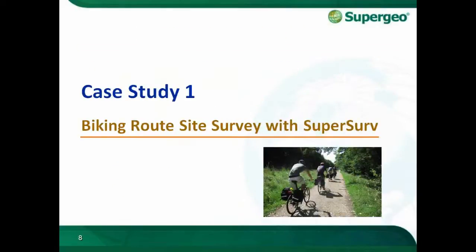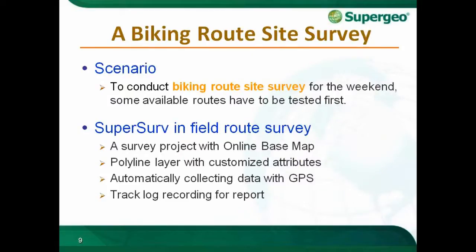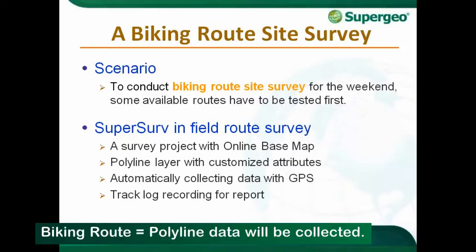Case study one is the biking route site survey with SuperServe. The scenario: I am going to conduct a biking route site survey for the weekend, taking colleagues to the riverbank park. I'll find available routes that need to be tested first, riding with my bike and mobile device using SuperServe. This will include demonstrating a survey project using an online base map, creating a polyline layer with customized attributes, collecting data automatically via GPS, and recording the track log of the biking route.